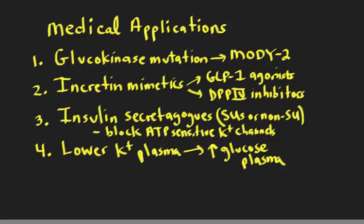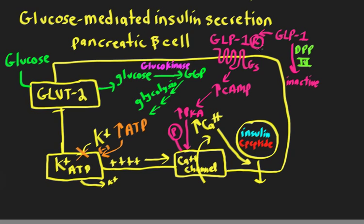The second drug application is a class called incretin mimetics. GLP-1 and other GI hormones that regulate insulin secretion are all considered incretins. An incretin mimetic mechanism can be achieved either by stimulating the GLP-1 receptor with a GLP-1 agonist, or by blocking the breakdown of endogenous GLP-1 with a DPP-4 inhibitor. Either approach enhances this pathway, causing more phosphorylation of the calcium channel and enhanced glucose-mediated insulin secretion.